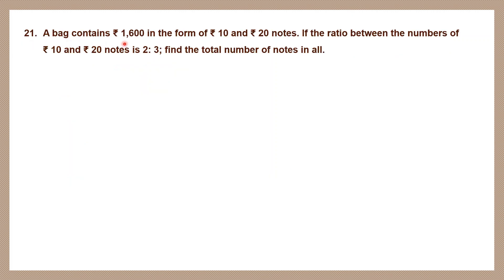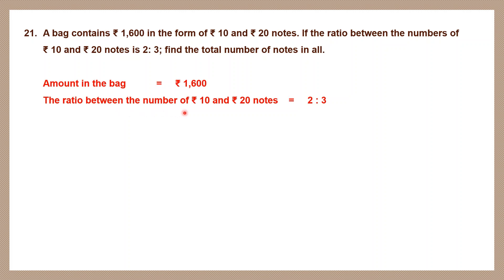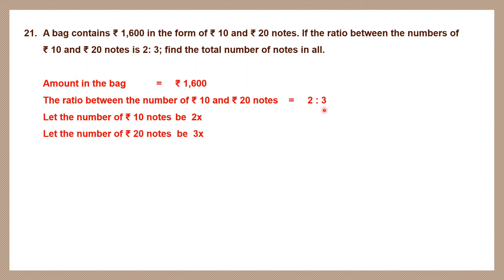Question 21. A bag contains 1,600 rupees in the form of 10 rupee and 20 rupee notes. The ratio between the number of 10 rupee and 20 rupee notes is 2 is to 3. Find the total number of notes in all. Let the number of 10 rupee notes be 2x and 20 rupee notes be 3x.